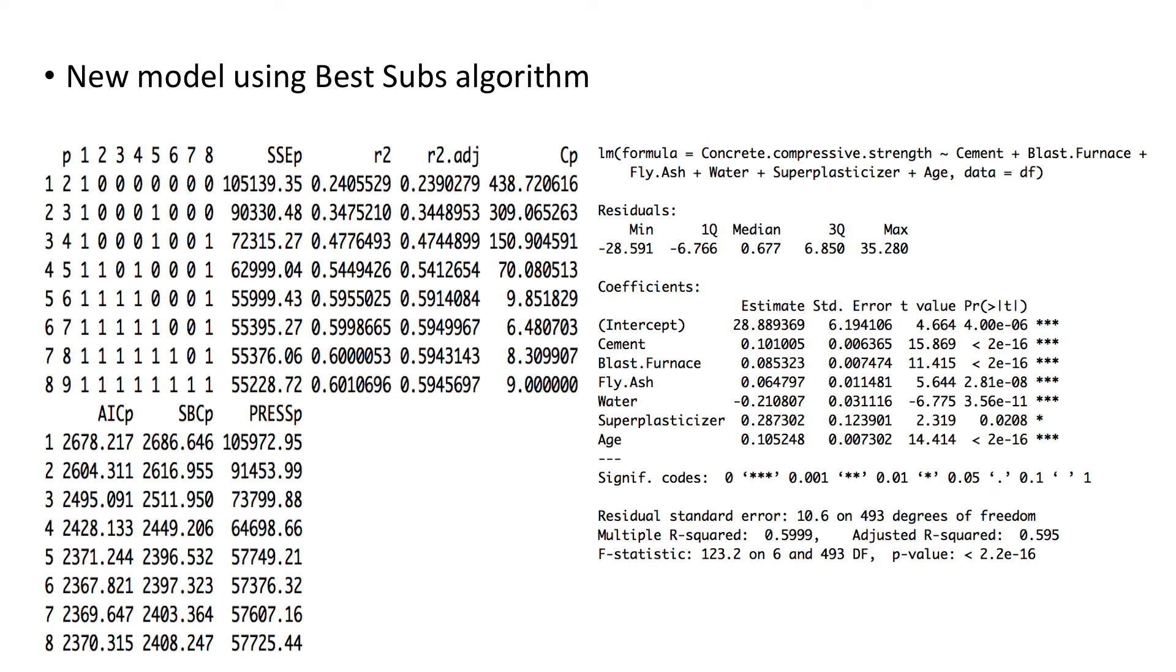The new model after seeing the added variable plots in the summary of the initial model and then applying the best subset algorithm, what we have is we can see that the subset with six variables, not including the coarse and fine aggregate, has the highest adjusted R squared. So, we will be using this as the next model we'll be working with.